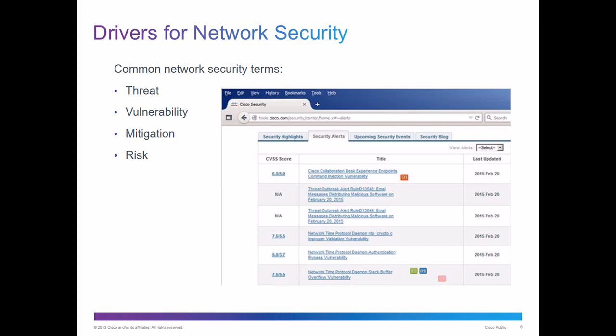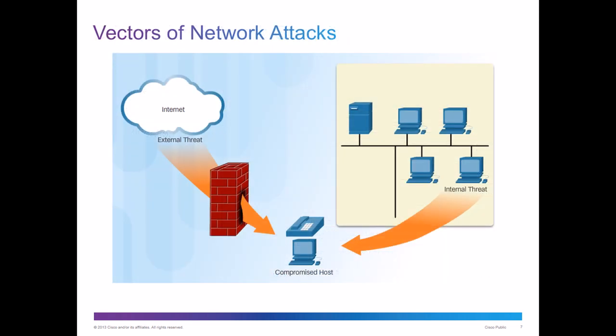Mitigation is how you mitigate against the threat — close your window, take the key away, put the alarm on. The risk is losing your car, and how you mitigate against the risk might be buying insurance so that if it's stolen, somebody will pay you back. Or if your car is old and you don't care about it, you can accept the risk. I just want to make sure you understand these terms as we go along.